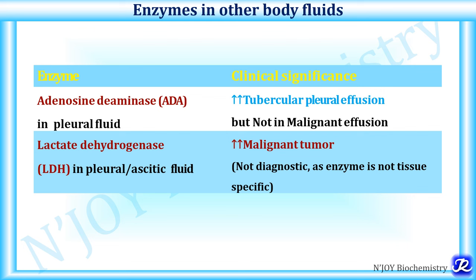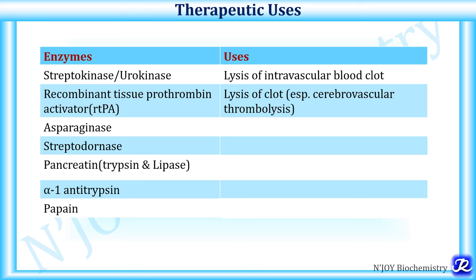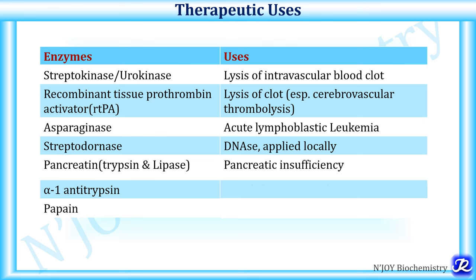Now for therapeutic uses — enzymes used for treatment of particular diseases. Streptokinase and urokinase are useful for lysis of intravascular blood clots. Recombinant tissue plasminogen activator is useful for lysis of clots, especially in cerebrovascular thrombolysis. Asparaginase is used in the treatment of acute lymphoblastic leukemia. Streptodornase is a DNase that can be applied locally. Pancreatin (trypsin and lipase) is useful for pancreatic insufficiency. Alpha-1 antitrypsin is used in alpha-1 antitrypsin deficiency and emphysema. Papain can be used as an anti-inflammatory agent.